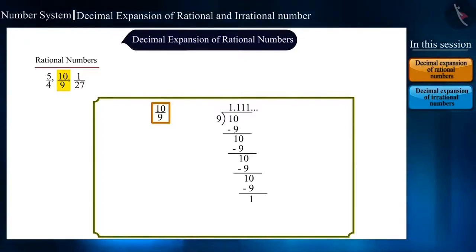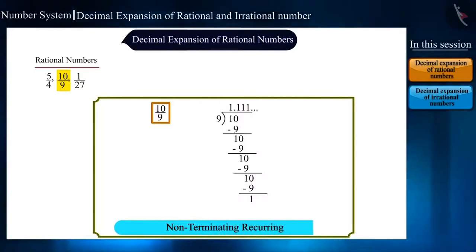A decimal expansion where both the remainder and the quotient are repetitive is called non-terminating or recurring decimal expansion. We can also write it as 1.1 with a bar. The bar above reveals the group of digits that recur.